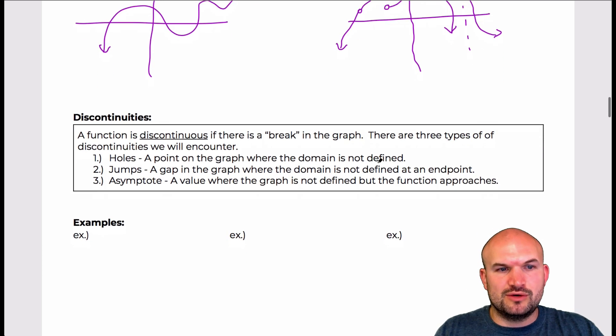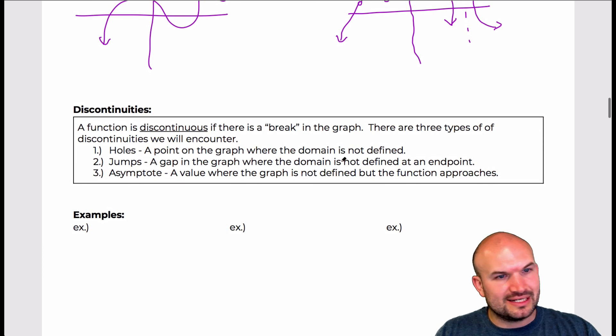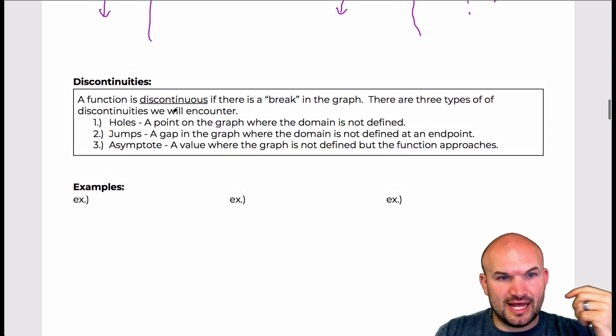Let's take a look at what discontinuities are. A discontinuous graph is when there's a break in the graph, and there's three different breaks that we're going to talk about. We're going to look at holes, jumps, and an asymptote.